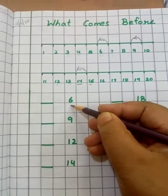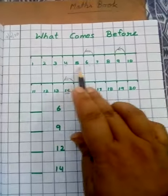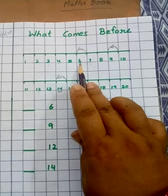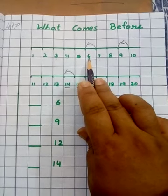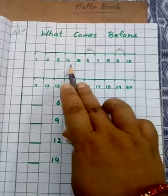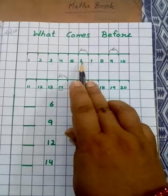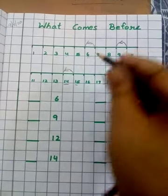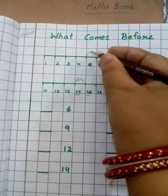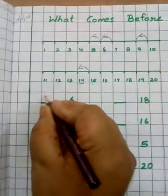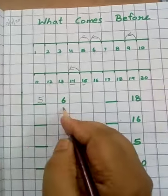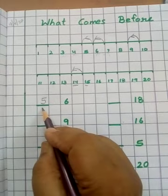What comes before 6? Look at the number line. Here is 6 and when we count in the backward direction — हम backward direction में जब count करेंगे तो 6 के just पहले कौन सा number आएगा? That is 5. So what comes before 6? It's 5.